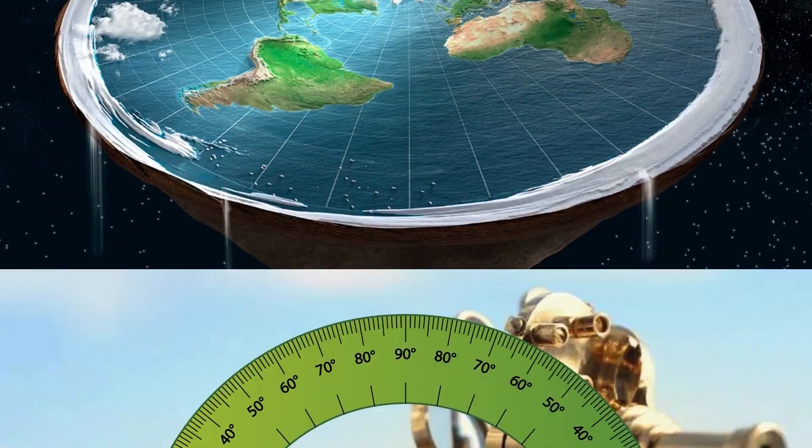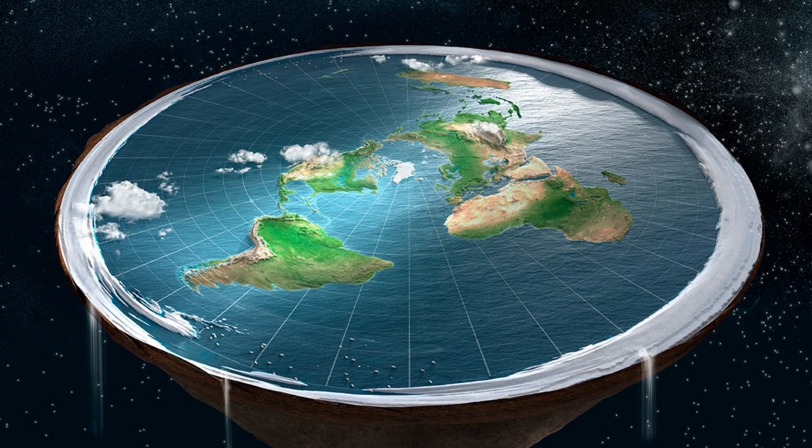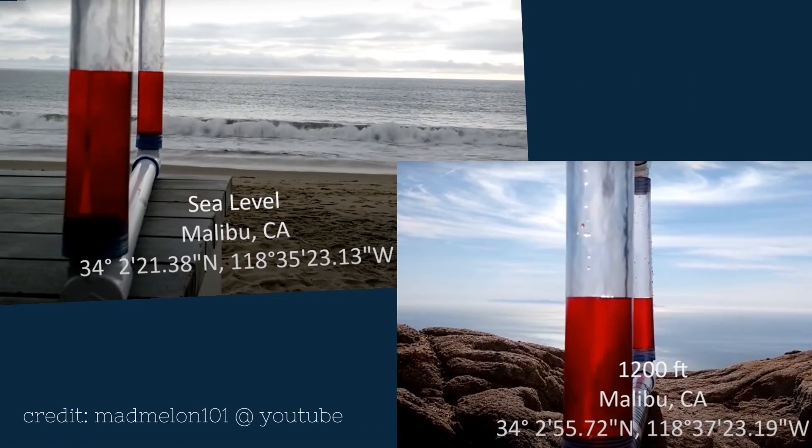On the ideal representation of a flat earth, the horizon will always be completely level with the observer. This is not what we perceive in reality though. So, we can determine that the horizon lowers with altitude, but this is very hard to detect without a proper way to determine true level.